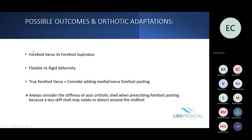With forefoot posting, if there is a true forefoot varus, you might want to add medial varus posting, as it brings the ground reaction force more centrally along the forefoot. This is essentially one of the only times you'd put in a forefoot varus post — for a fixed rigid deformity. If it's a forefoot supinatus, you're unlikely to need a forefoot wedge because the forefoot will compensate anyway. Also always consider the stiffness of your orthotic shell when prescribing forefoot posting, as a less stiff shell may rotate and distort around the midfoot.